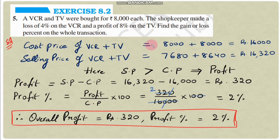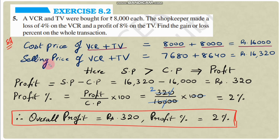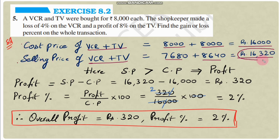Now we have both cost prices and selling prices. Total cost price of VCR + TV = 8000 + 8000 = 16,000 rupees. Total selling price of VCR + TV = 7680 + 8640 = 16,320 rupees. Since 16,320 > 16,000, selling price is greater than cost price, meaning there is a profit.